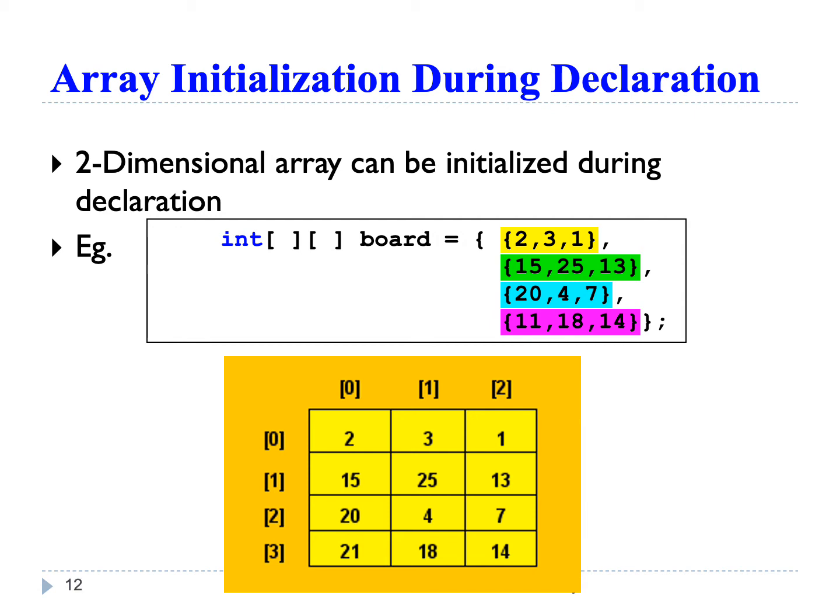For example, we can write int[][] pod equal to opening braces, then another set of braces for the first row with values for each column — value 2 at column 0, value 3 at column 1, and value 1 at column 2. To initialize the next row, we add a comma to separate the rows, then another set of braces with values for the second row at column 0, column 1, and column 2. Similarly for the third and fourth rows. Remember to close the outer braces. The table shows the values in rows and columns based on this initialization.